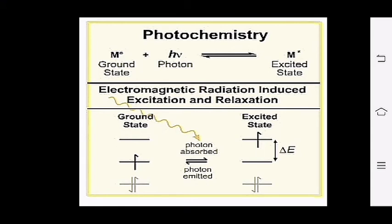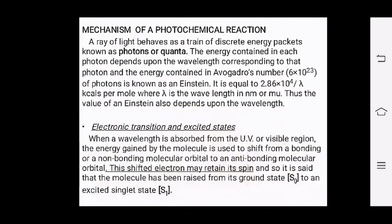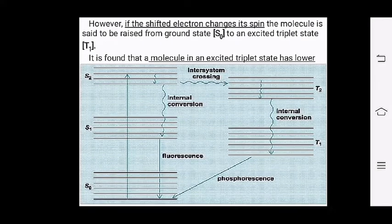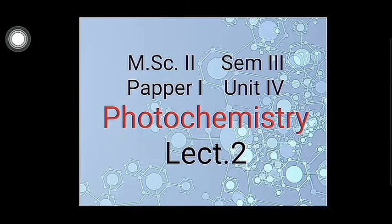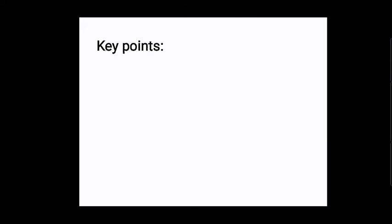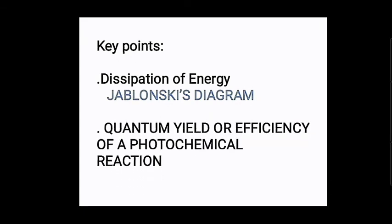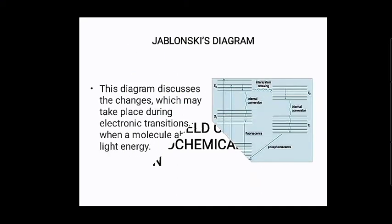We also discussed excitation of electrons from the ground state to the excited state by absorption of photons from light, and the mechanism of photochemical reactions including electronic transitions and excited states. You can go through those slides for more information. In today's lecture, we are going to cover Jablonski's diagram and dissipation of energy, and then quantum yield or efficiency of a photochemical reaction.